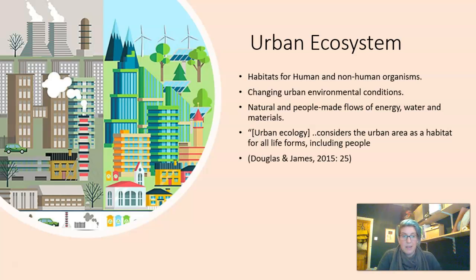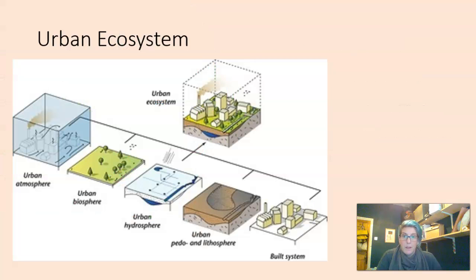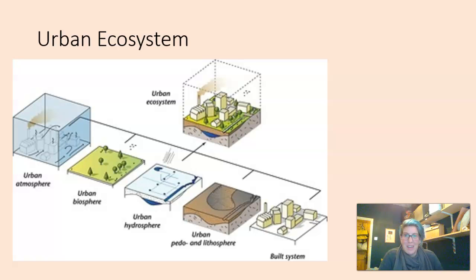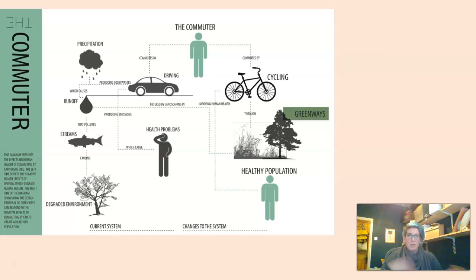That's a quote from Douglas and James, which is one of the key texts for the module on the reading list. Moving forward, we need to think of cities as being a complex ecosystem that not only needs to benefit people directly, but needs to benefit all the species of the Earth, both in the area of the city and on a global scale. You could think about the urban ecosystem in quite technical ways: the urban atmosphere, the biosphere, the hydrosphere - the water systems of the city - and the lithosphere, the underlying geological structures and soils underneath the built form. All of these things work together, with the built system on top.